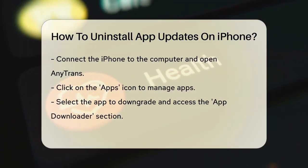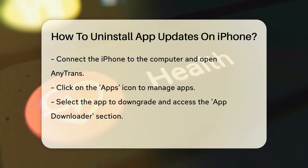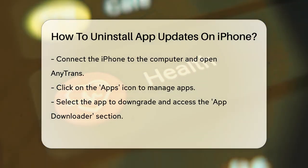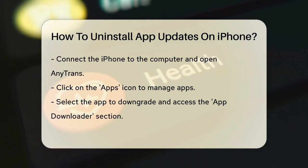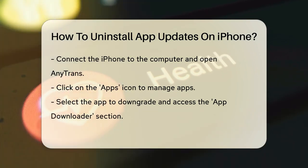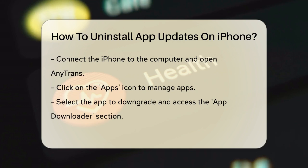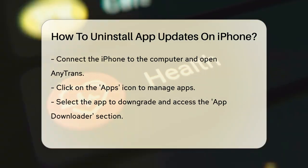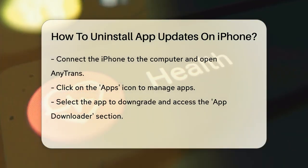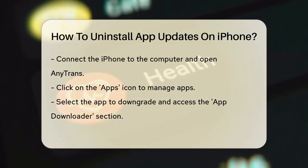Download and install AnyTrans on your computer. Connect your iPhone to the computer. Open AnyTrans, click on the Apps icon, and manage your apps. Choose the app you want to downgrade, go to the App Downloader section, and select the older version of the app you want to install. Sign in with your Apple ID to download the older version and then install it on your iPhone.